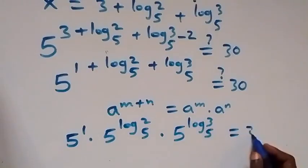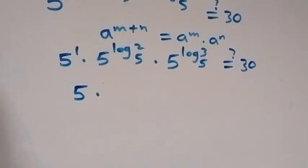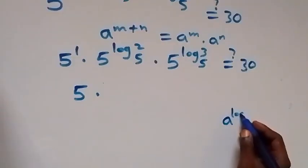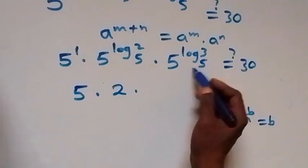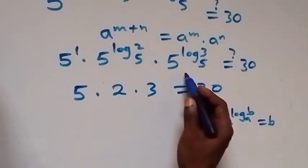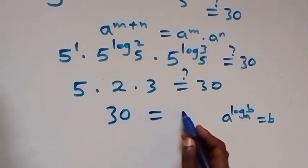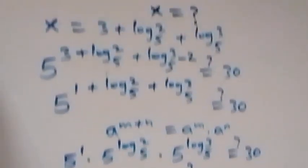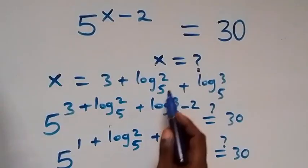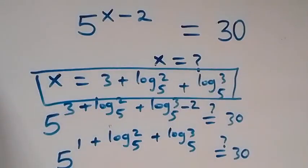With base 5, this equals 30. Then 5 raised to power 1 is the same as 5. Using the rule that a raised to power log b base a equals b, this gives us 2 here times 3 here, equals 30. So we have 5 times 2, that's 10, times 3, that's 30, which equals 30. Left hand side equals right hand side, and hence x equals 3 plus log 2 base 5 plus log 3 base 5 satisfies this given problem.